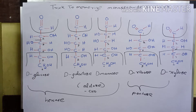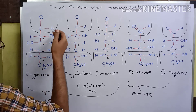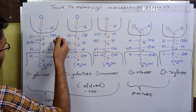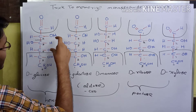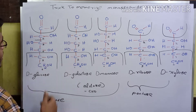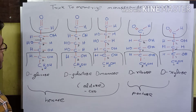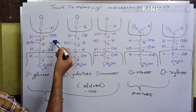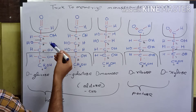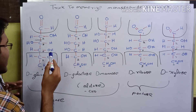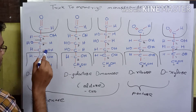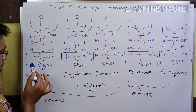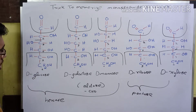If you see the glucose structure, the hydroxyl group and hydrogen group are arranged in an alternating manner — that is, first hydroxyl, then hydrogen, then again hydroxyl. You can easily memorize this structure. Now we are clear with the glucose structure.